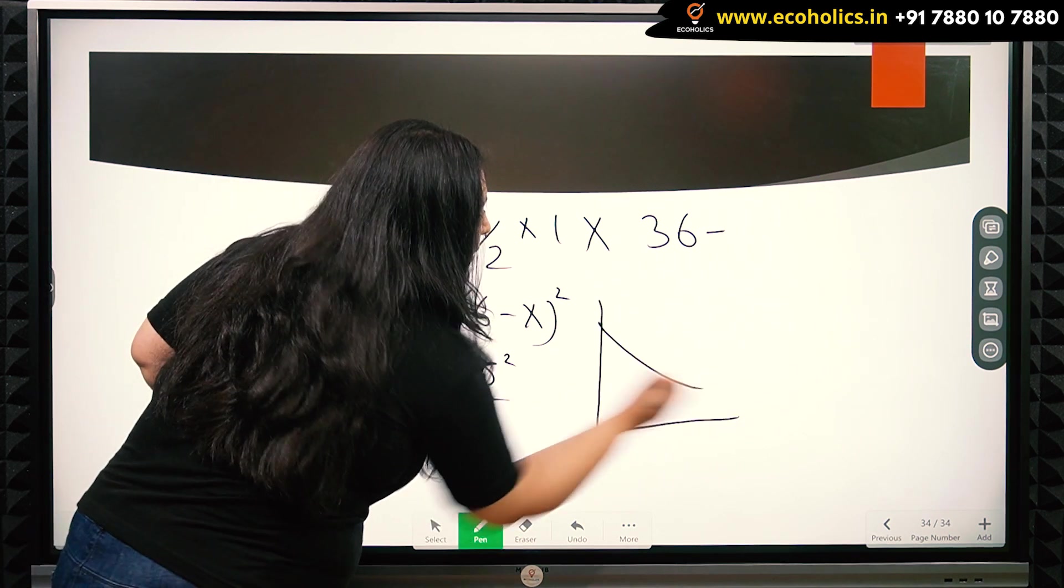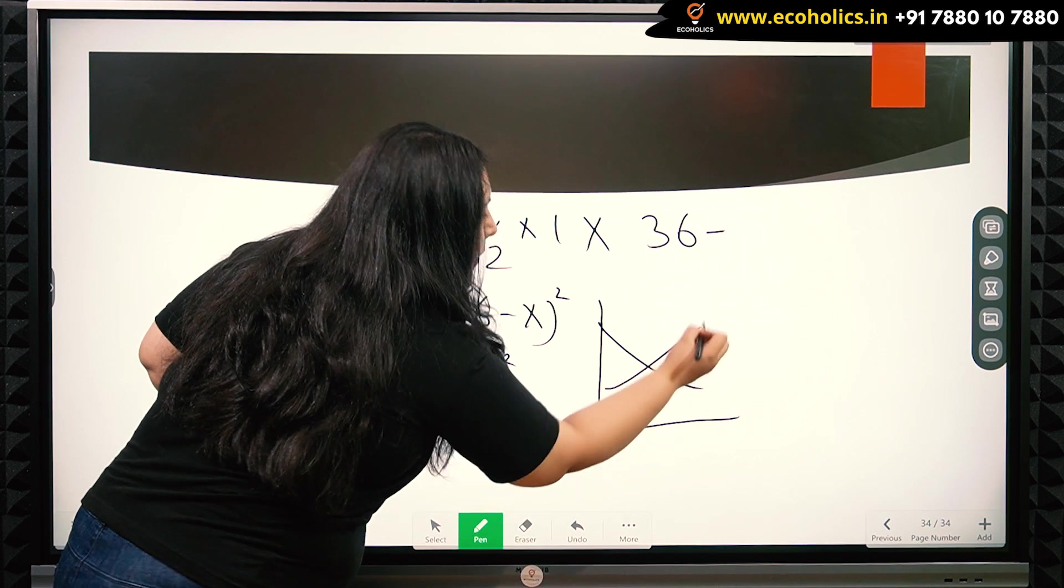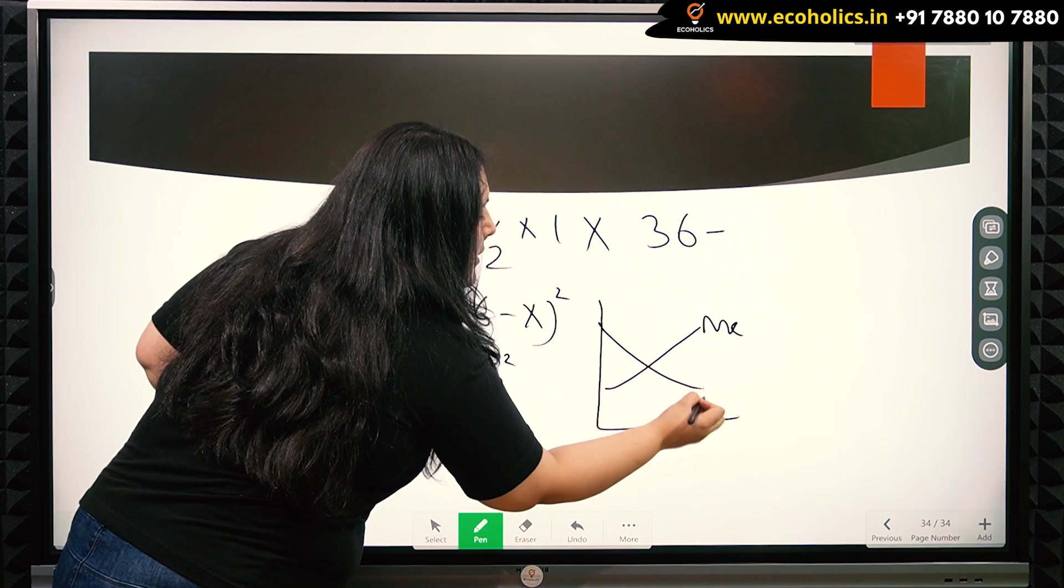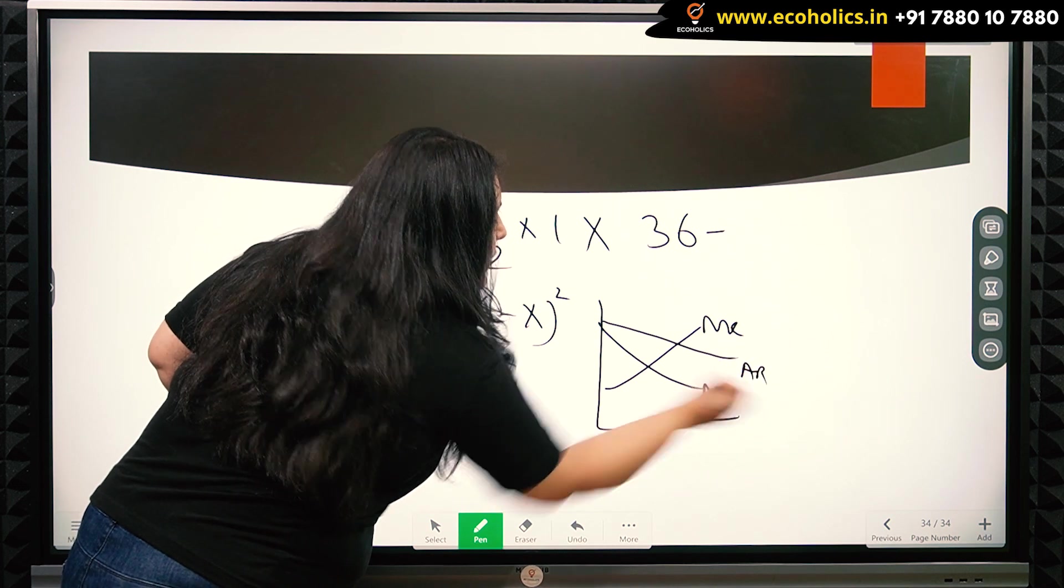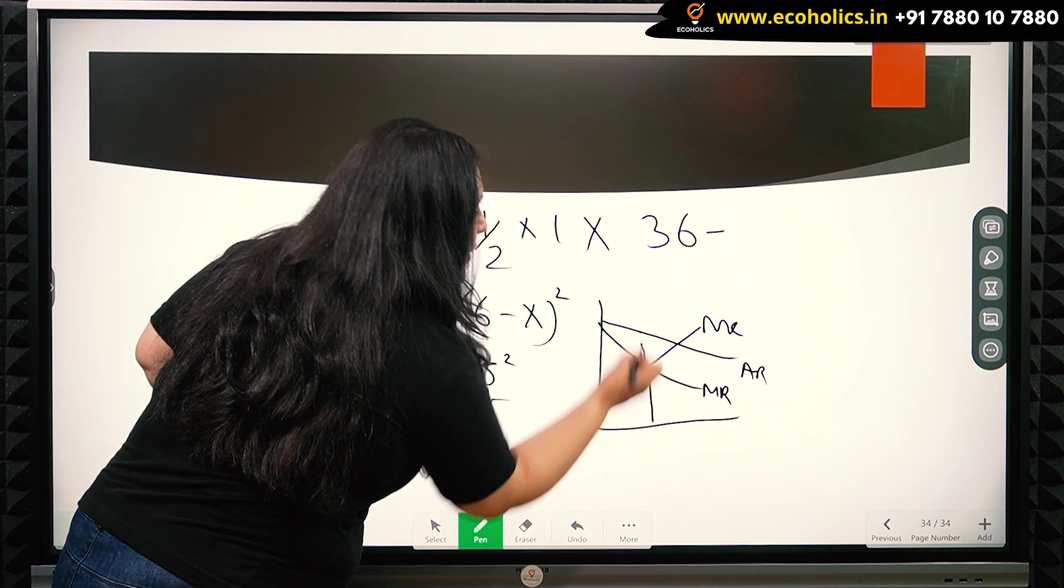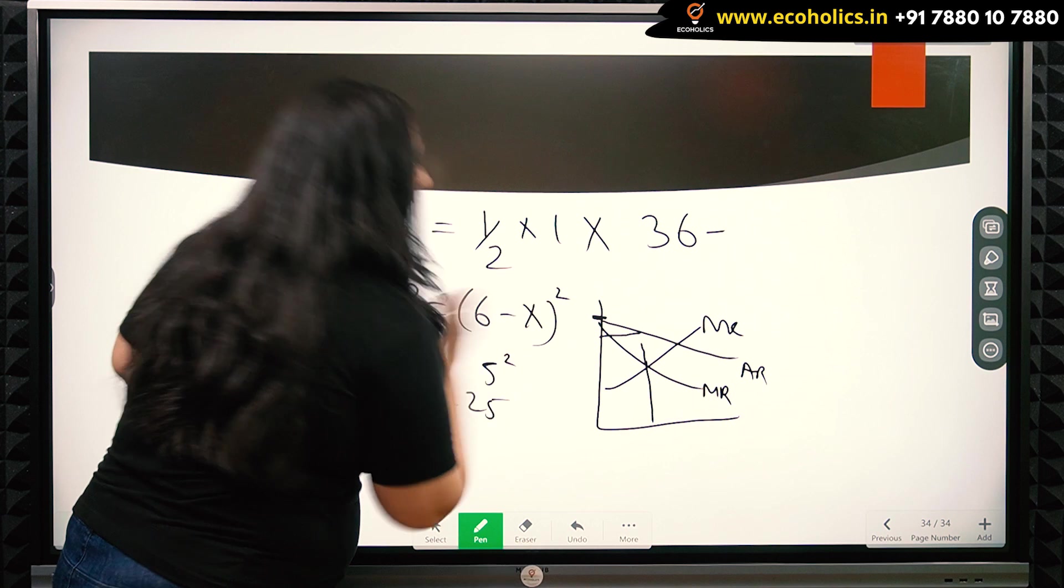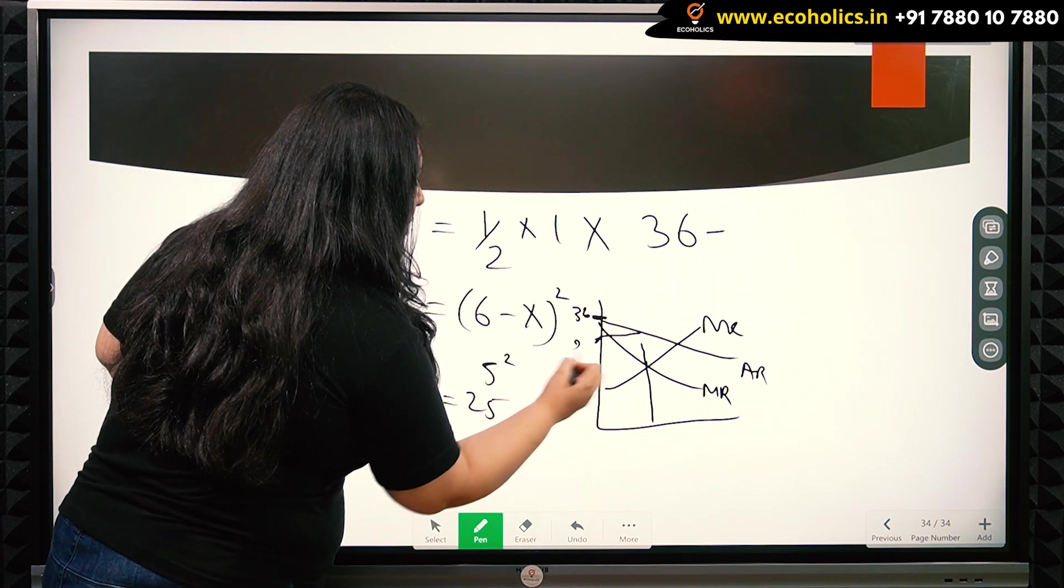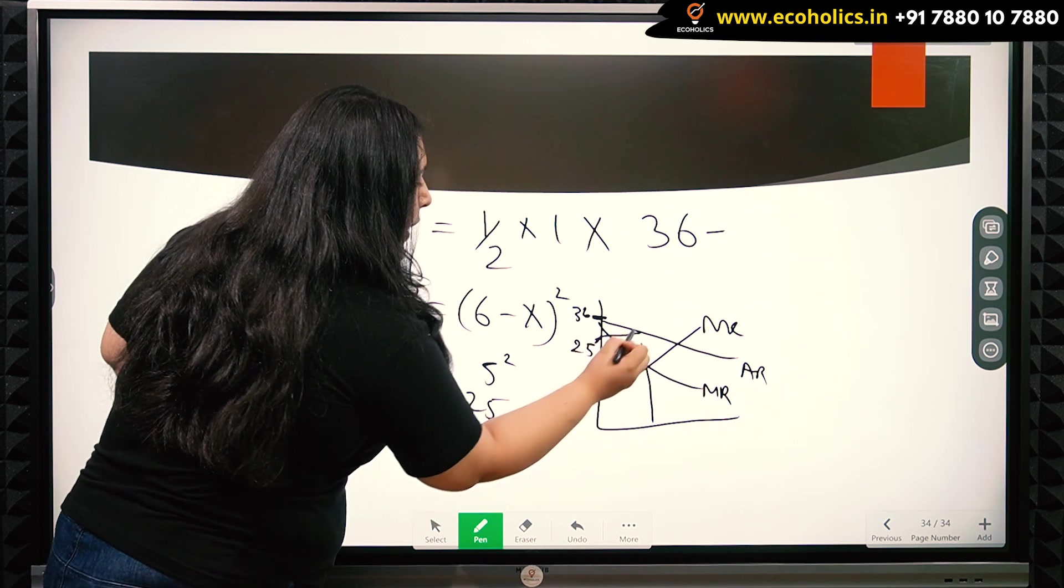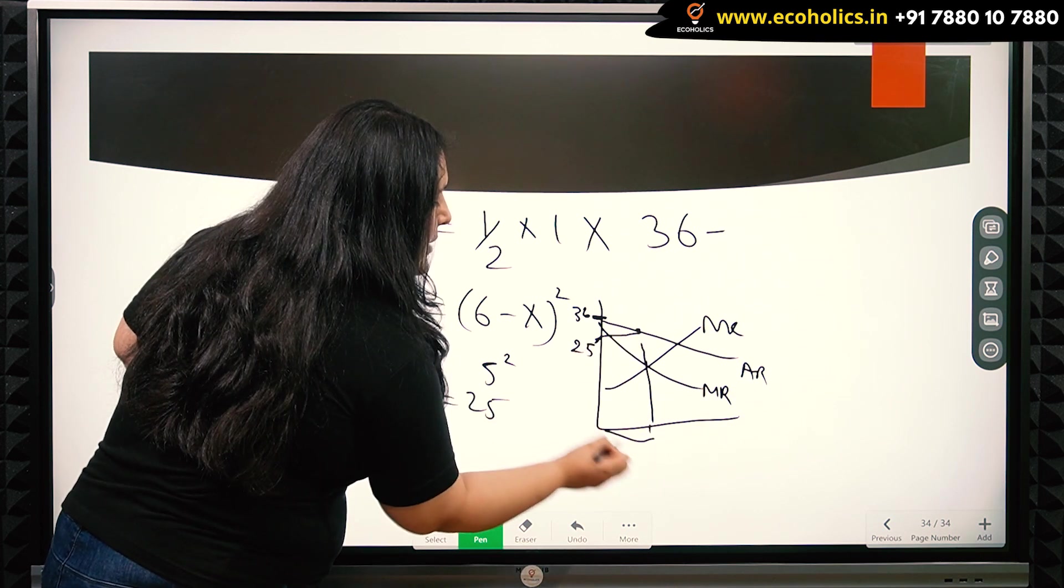Effectively, this is the marginal cost. This is the marginal revenue. This is the average revenue. The value here is 36 and the price here is 25. Quantity here is 1.